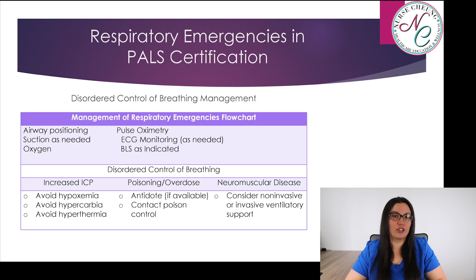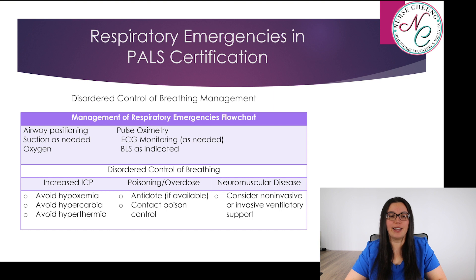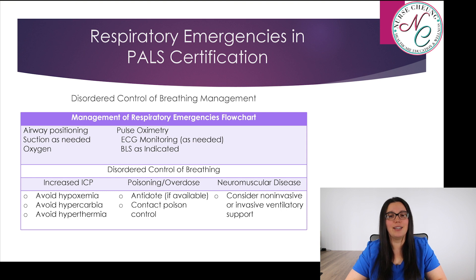With increased intracranial pressure, we're going to avoid hypoxemia, hypercarbia, and hypothermia — so we treat those. For poisoning and overdoses, we look for an antidote if one is available and contact poison control. For neuromuscular disease, we want to consider non-invasive or invasive ventilatory support, because these patients may not be able to maintain their airway.